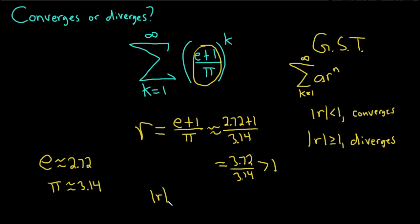So r is bigger than 1 in absolute value. So it meets this condition here, the greater than or equal to 1. So this series will diverge.